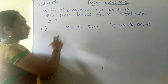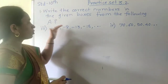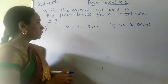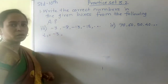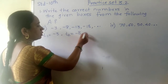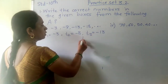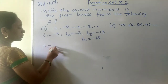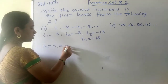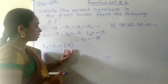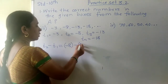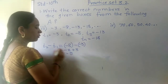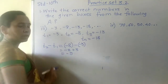Third example — the sequence keeps decreasing: -3, -8, -13, -18. T1 equals -3, T2 equals -8, T3 equals -13, T4 equals -18. We check: T2 minus T1 is -8 minus (-3), which becomes -8 plus 3, giving -5. Then T3 minus T2 is -13 minus (-8), which is -13 plus 8, giving -5. So T2 minus T1 equals -5.